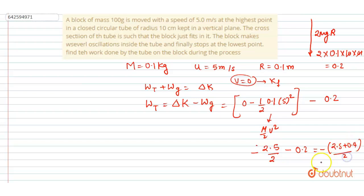By 2 it will be negative of 2.9 by 2, that is equal to work done by tube is equal to 2.9 by 2, which is equal to negative 1.45. And this is the net work done by tube in the whole process.